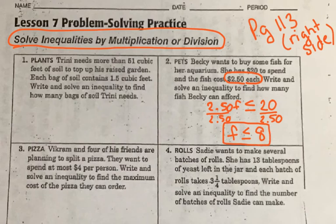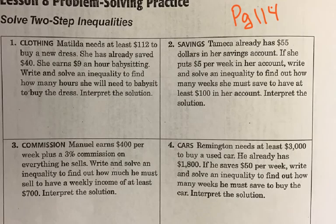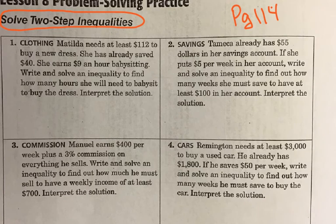Let's jump over to page 114. On page 114 we are solving two-step inequalities, so this time you're going to have a multiply-or-divide part and an add-or-subtract part. Number two: Tamika already has $55 in her savings account. If she puts $5 per week in her account, write and solve an inequality to find out how many weeks she must save to have at least $100 in her account.